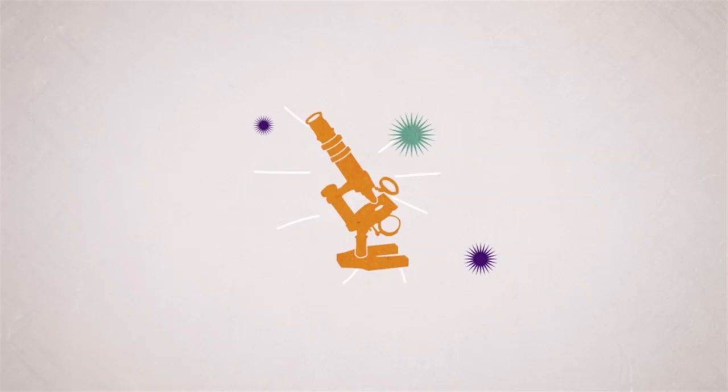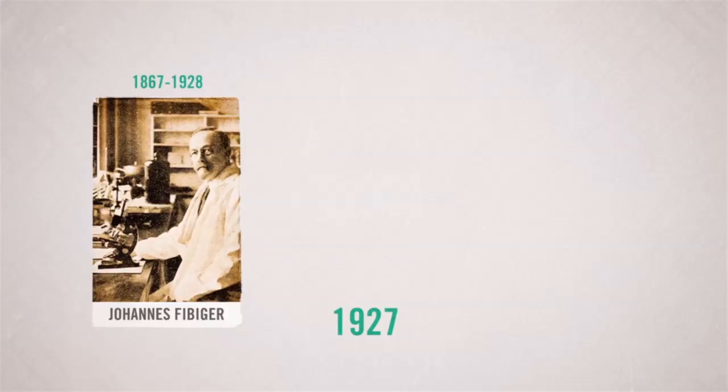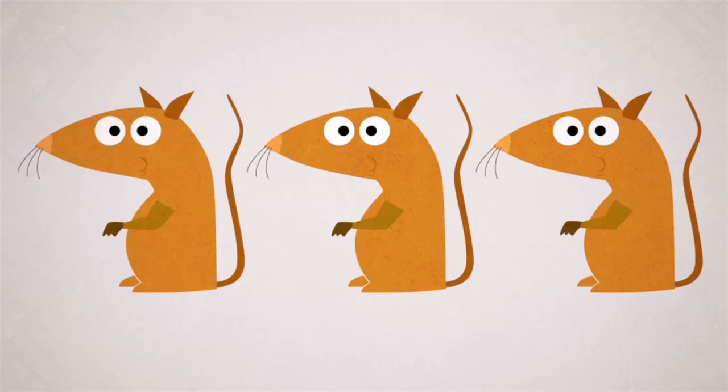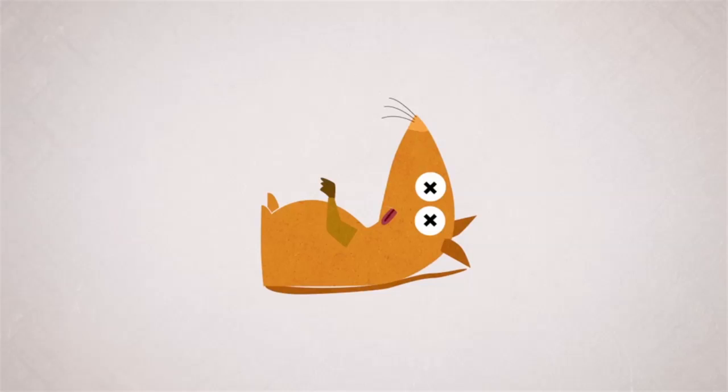Scientific research on cancer has been around for some time. In 1927, Johannes Fiebiger was the first researcher to be awarded a Nobel Prize for his work on the disease, ironically thanks to a scientific error. Fiebiger had fed rats with cockroaches that carried a worm called Spiroptera carcinoma. The rats eventually developed stomach cancer and died as a consequence.